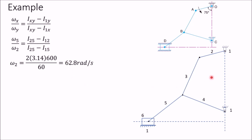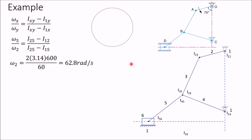First, locate by inspection whatever instantaneous centers you can. This joint of link 1 and 2 is I₁₂. This is I₂₃. At this joint where three links connect, there are three instantaneous centers: I₃₅, I₃₄, and I₄₅. One instantaneous center is between 1 and 4. Then I₅₆ and I₁₆ — I₁₆ is at infinity in the direction perpendicular to slider motion. Draw a circle and mark 6 points for the 6 links: 1, 2, 3, 4, 5, 6. Mark all known instantaneous centers by drawing lines between the corresponding numbered points.